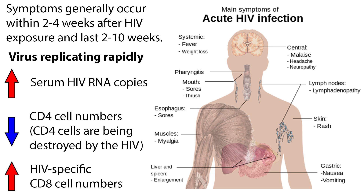During this time, the virus is replicating rapidly, and there is a corresponding rapid rise in serum HIV RNA copies, a decrease in CD4 cell numbers as the CD4 cells are being destroyed by the HIV, and a large increase in HIV-specific CD8 cell numbers.